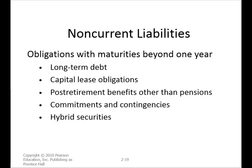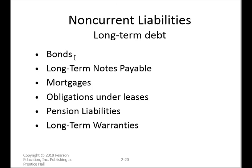The non-current liabilities represent things that are for more than one year. What can those things be? Bonds, long-term notes payable, mortgages. We're going to talk about leases. Leases are a very important part of gathering assets and how we pay for gathering certain kinds of assets. And of course, pensions and warranties that we may have on the assets that we sell could be very long-term types of arrangements and contractual obligations.